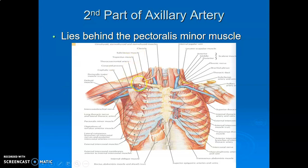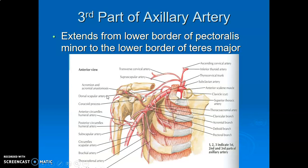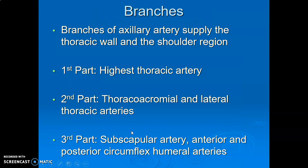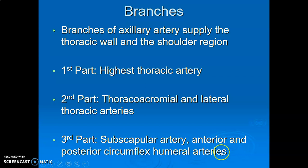Pec minor comes from the costochondral borders of the third, fourth, and fifth ribs and inserts into the coracoid process. The part of the axillary artery medial to pec minor is the first part; posterior to pec minor is the second part; lateral to pec minor is the third part, from the lower border of pectoralis minor to the lower border of teres major. First part: superior thoracic artery. Second part: thoracoacromial and lateral thoracic. Third part: subscapular and anterior and posterior circumflex humeral arteries.